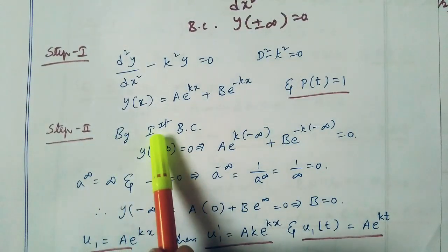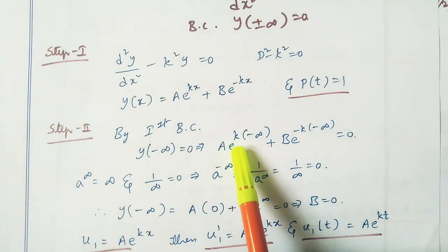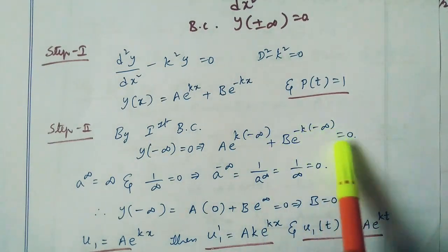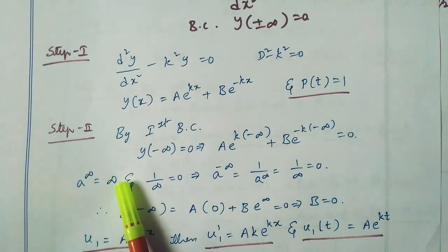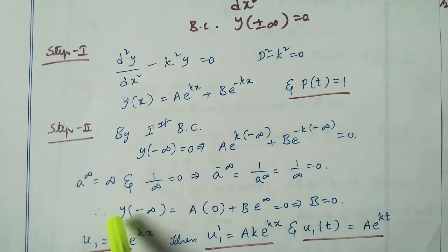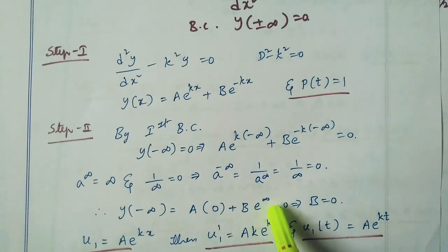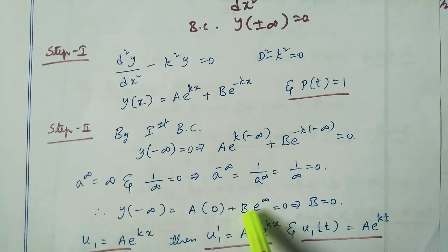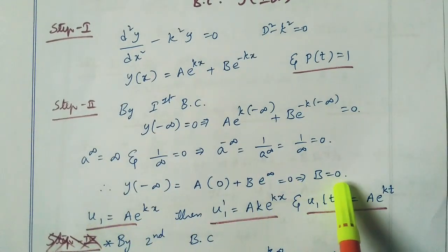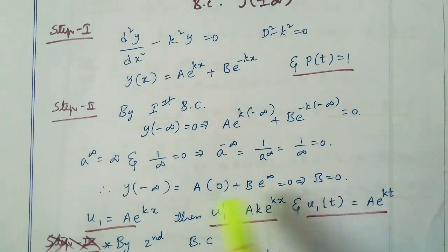Step 2: by applying the first boundary condition y(minus infinity) equal to 0, we get a·e^(k·(-∞)) plus b·e^(k·∞) equal to 0. Since e^(-∞) equals 0 and e^(∞) equals infinity, then b must equal 0. Therefore u1 equal to a·e^(kx), u1 dash equal to ak·e^(kx), and u1(t) equal to a·e^(kt).